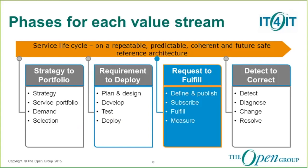Let us review the four value streams to put the request to fulfill value stream into overall context. First, strategy to portfolio is focused on the planning side — understanding your business needs, managing the portfolio of services, and defining roadmaps. It defines strategic themes and required investments, and is where we design, analyze, rationalize, and modify the portfolio of services and trigger new initiatives. Then requirement to deploy focuses on building and sourcing — turning investment decisions into actual services. This covers development, configuration, and maintenance of services. It supports both waterfall and agile and lean development practices, as well as configuration of standard services.